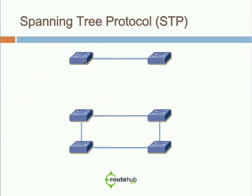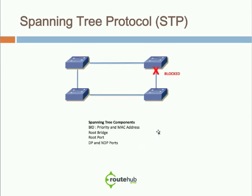Below, we see four switches connected together participating in a loop. Spanning tree will notice this and do its appropriate operation to start blocking down ports — one particular port that will break the loop. For example, it may determine that this particular port needs to be blocked.